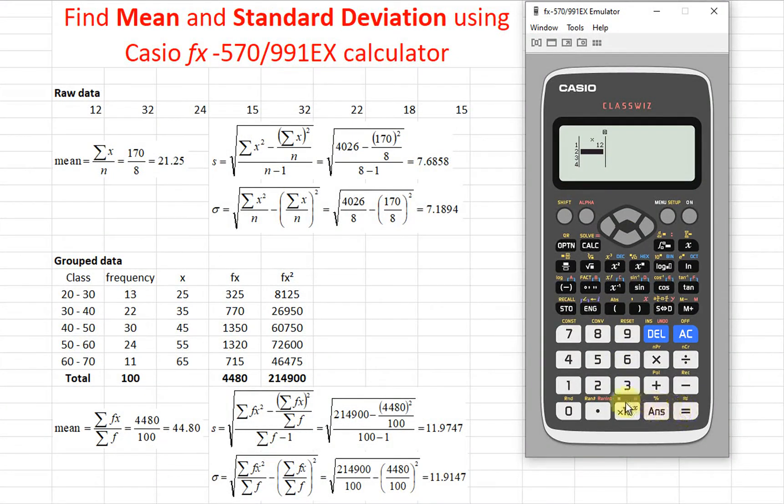So 12, then 32, then 24, then 15, then 32, then 22, then 18, and 15.